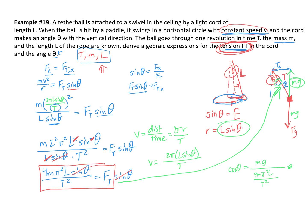So cosine(theta) equals mg divided by (4mπ²L / T²). I can multiply by the reciprocal, the T² goes to the top, and the m's cancel out. That gives cosine(theta) equals gT² over 4π²L, and therefore theta equals cosine⁻¹(gT² over 4π²L).